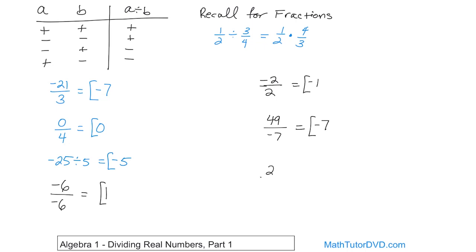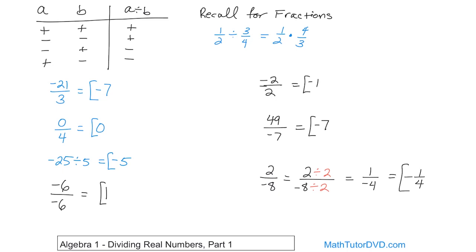What about two divided by negative eight? You can't do straight multiplication, but you can simplify this fraction. You have two over negative eight. Divide the top by two and the bottom by two: two divided by two is one on top, and negative eight divided by two is negative four on the bottom. Since the negative sign is on the bottom, it can float out in front, giving you negative one-fourth.